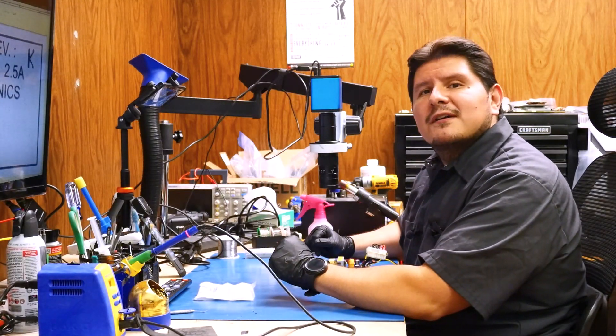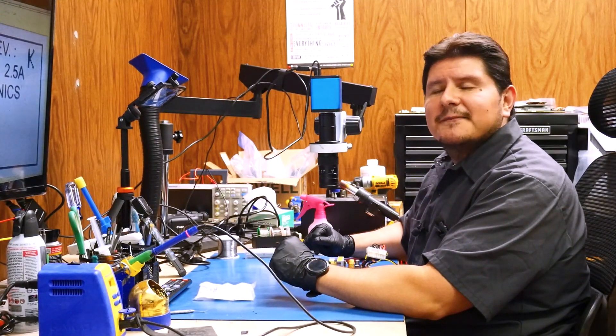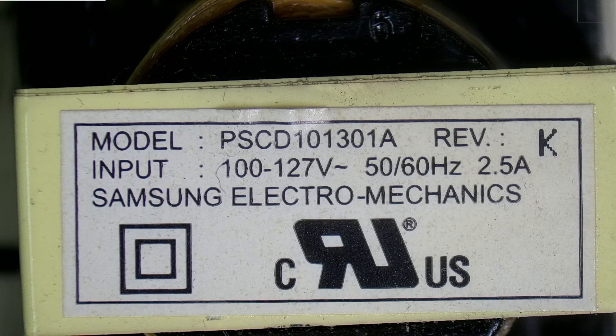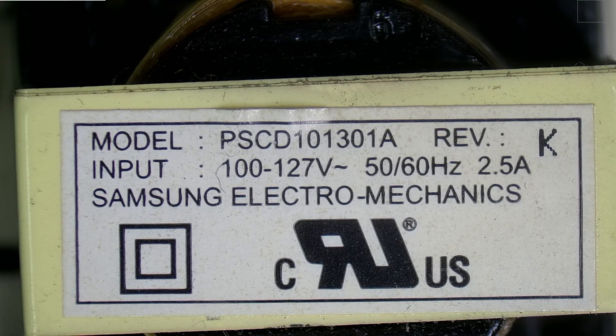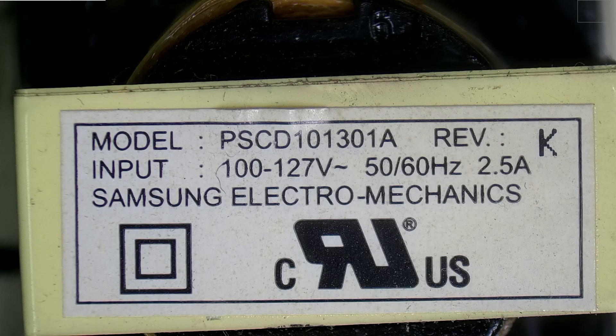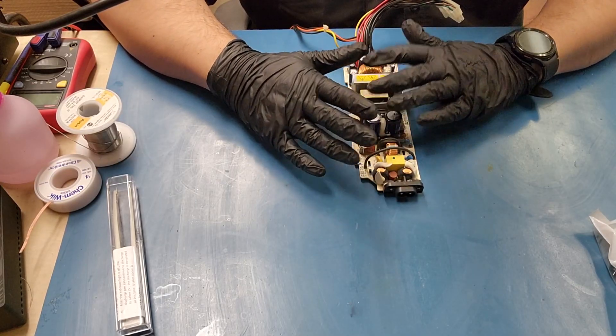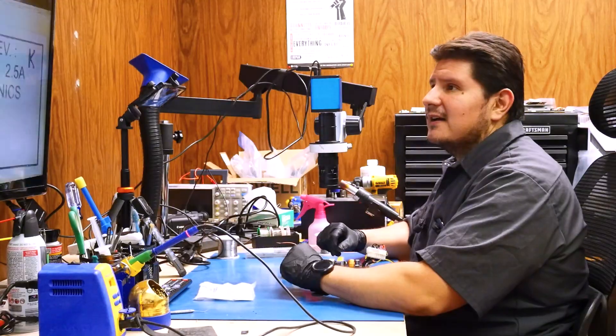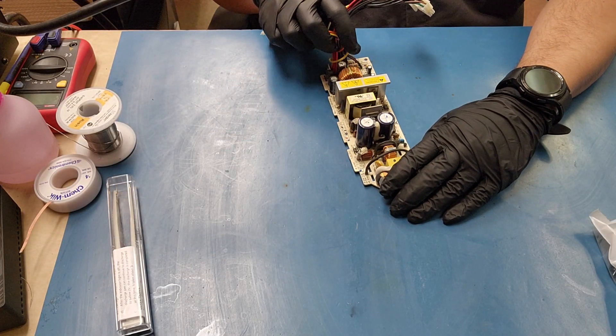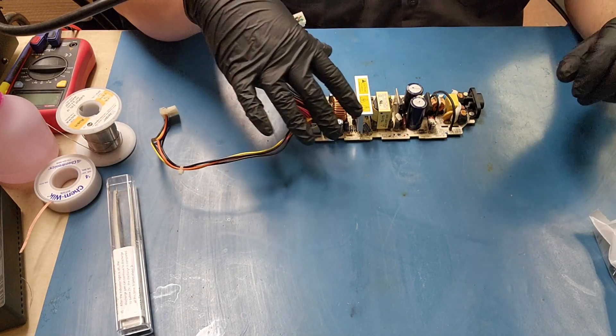The Xbox power supply that we're going to be working on today is the Samsung Tuscany. It is model number PSCD101301A, revision K. And of course this is the North American version power supply, which means it is the 100 to 127 volts, which also works in Japan.